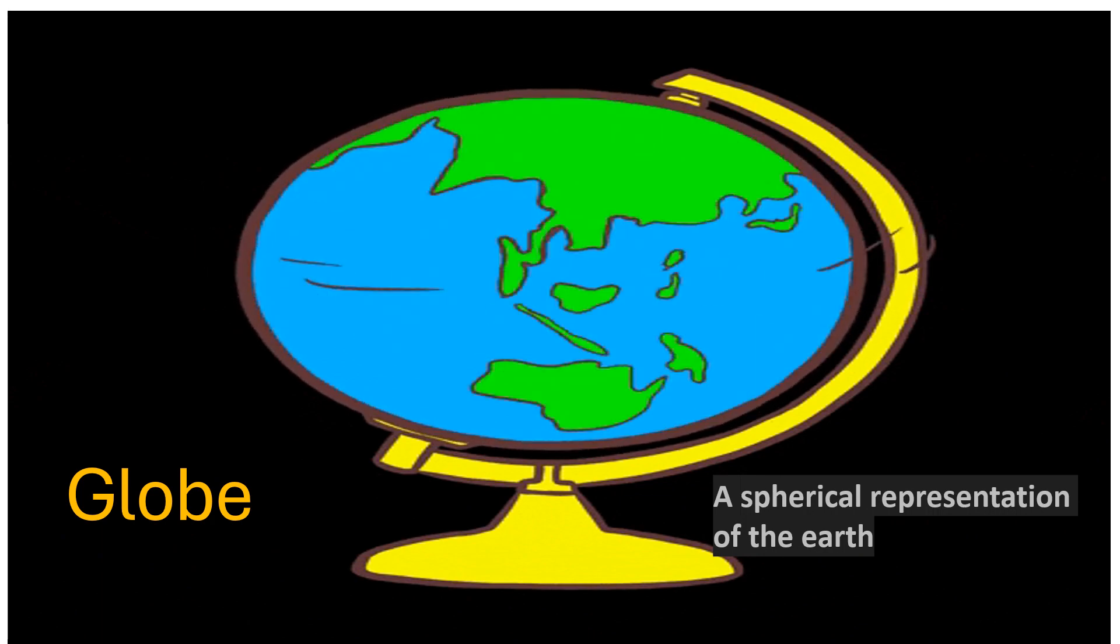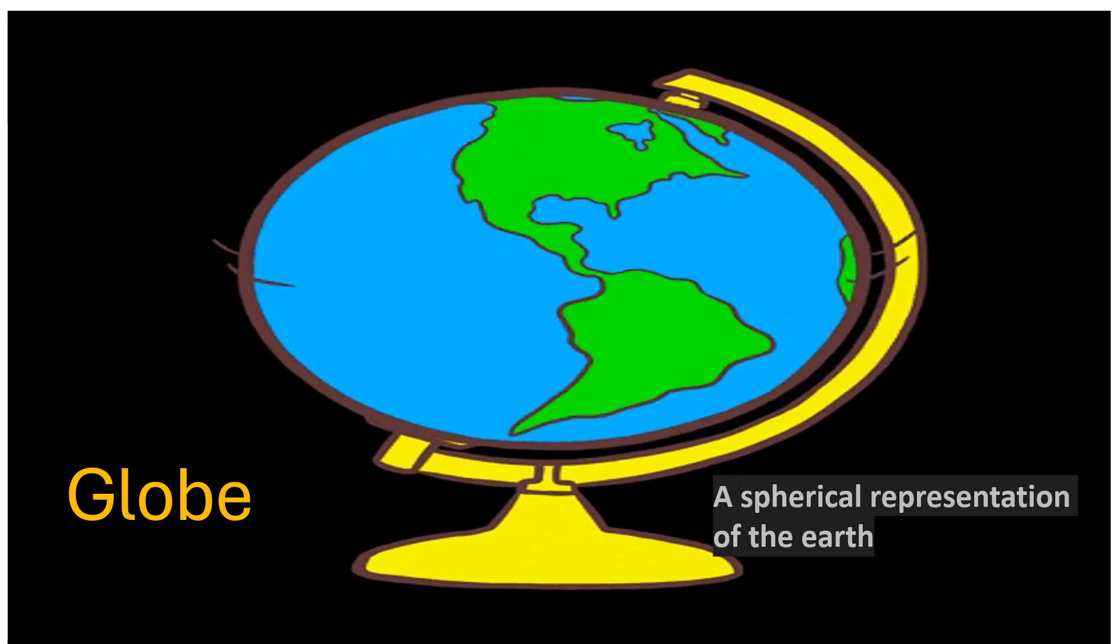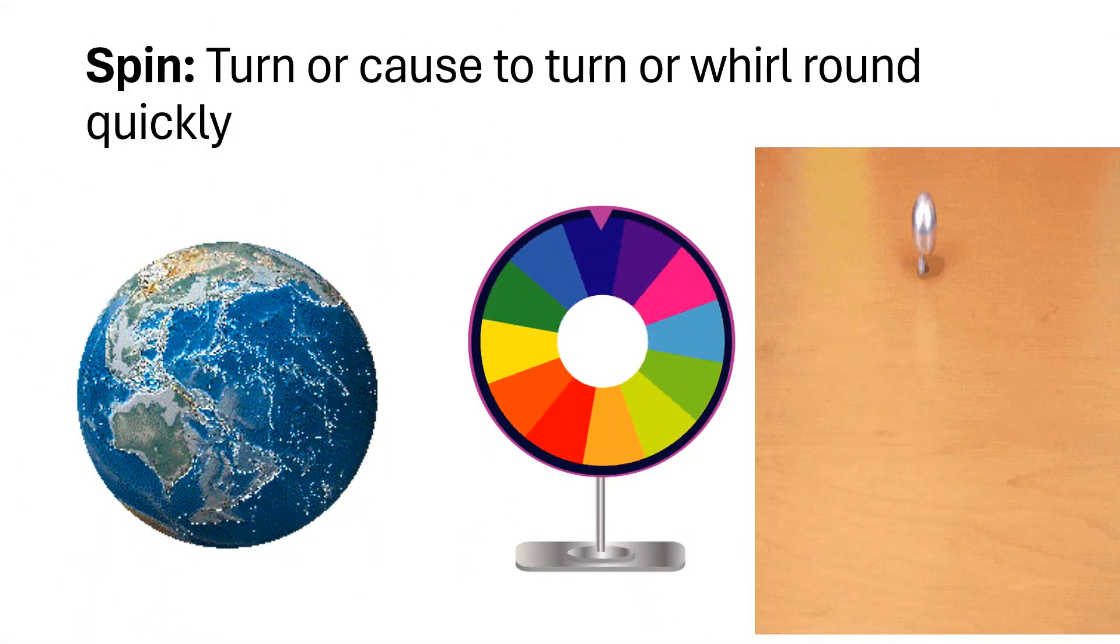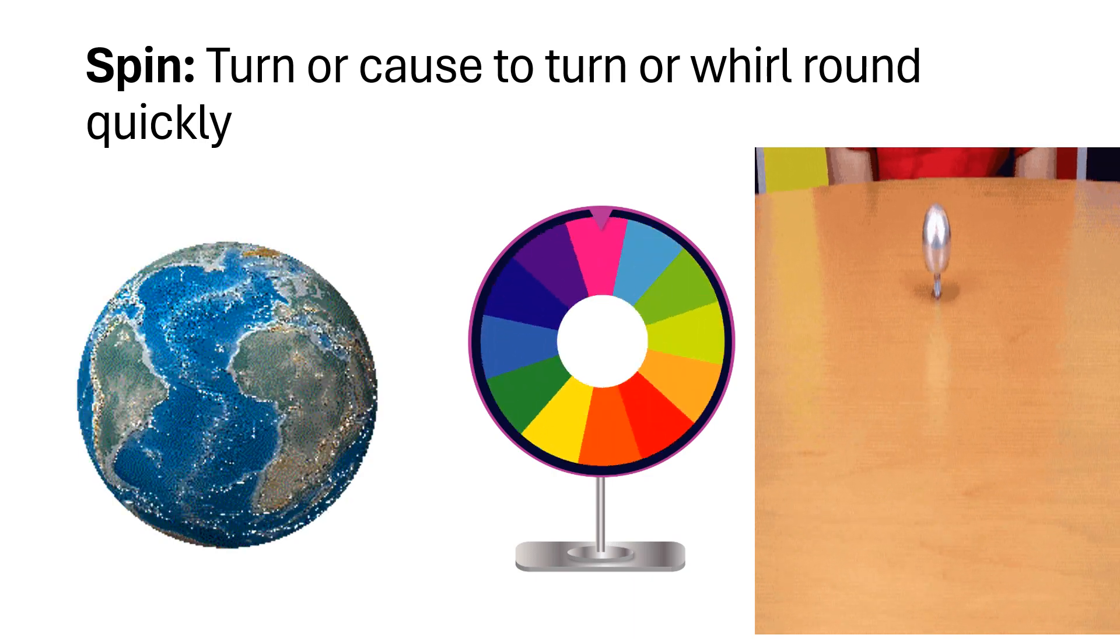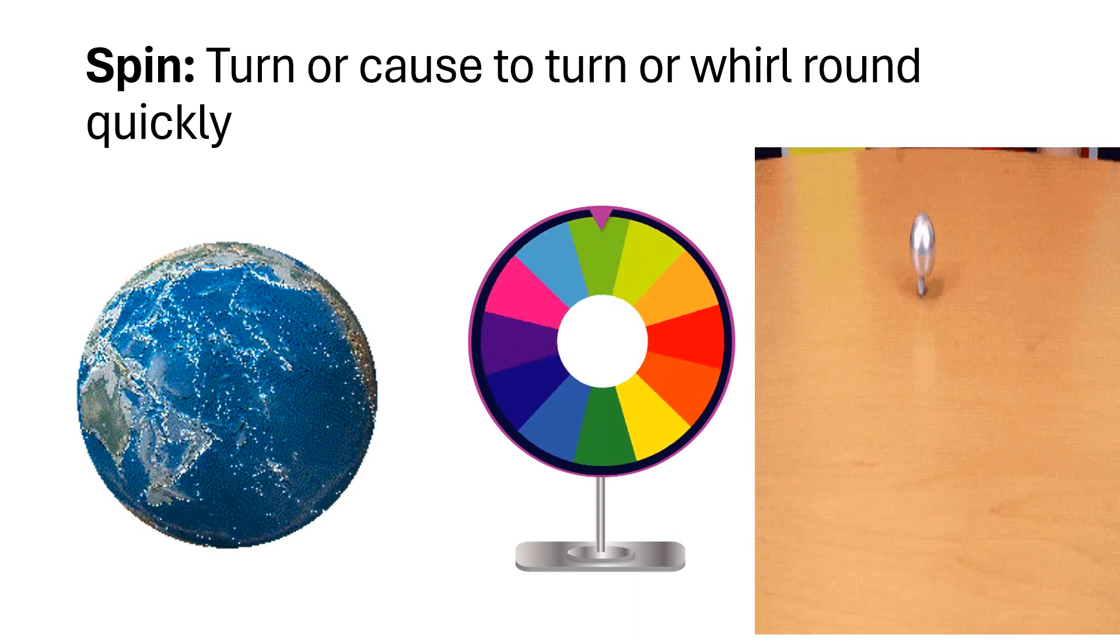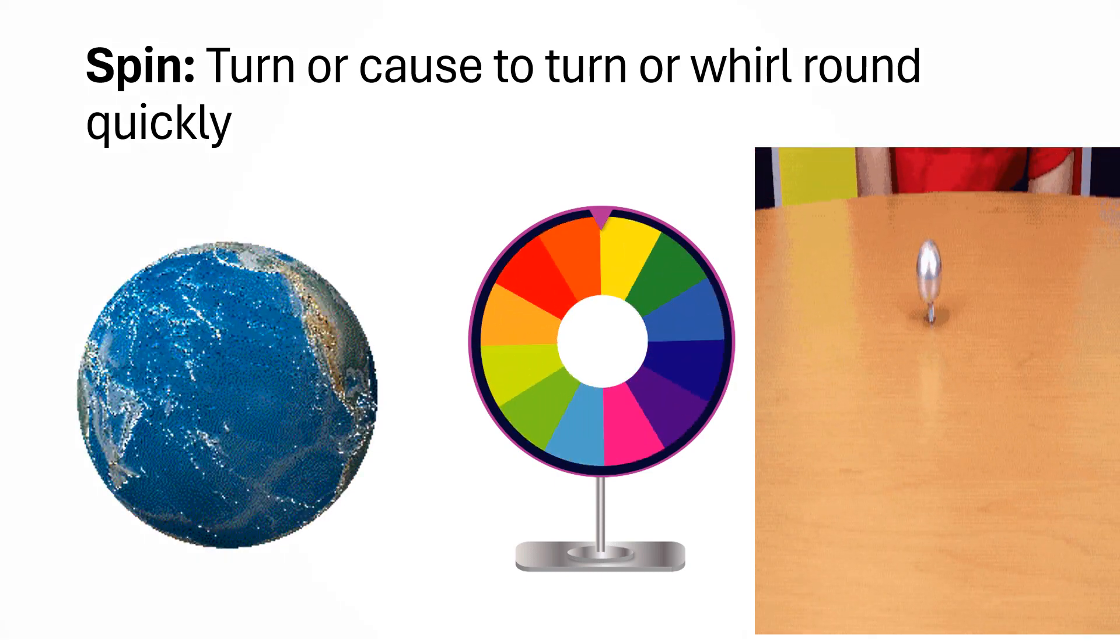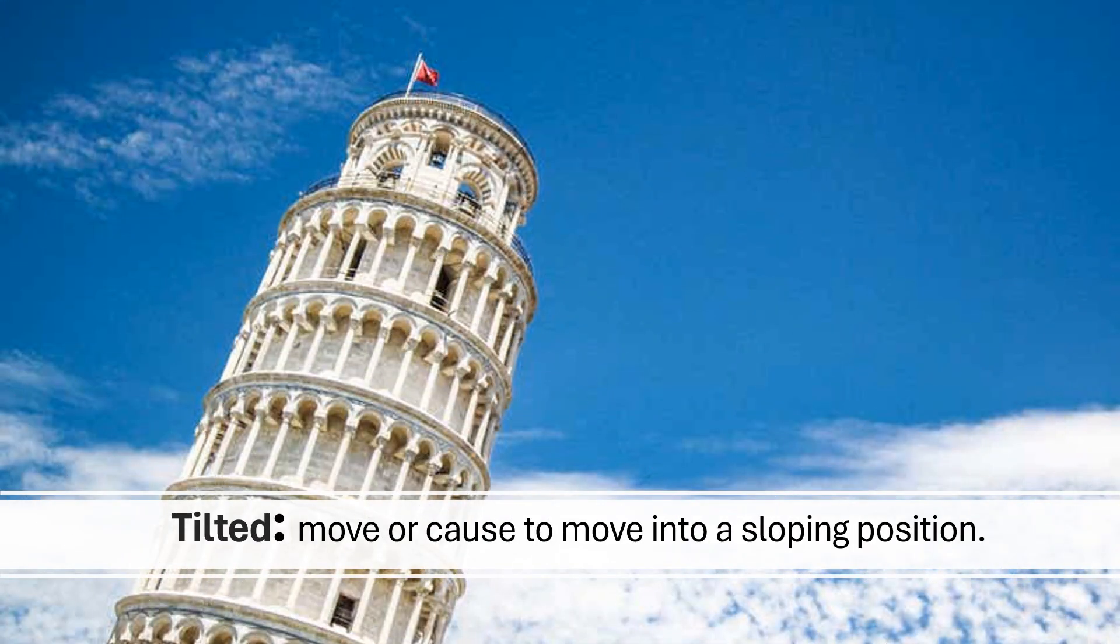Globe: It is a spherical representation of the Earth. Spin means to turn or cause to turn, to whirl around quickly. Tilted means to move or cause to move into a sloping position.